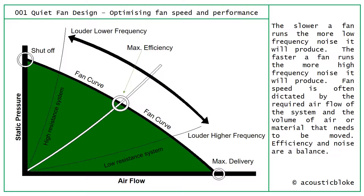Looking at optimized fan speed and performance on a graph — with airflow along one axis and static pressure along the other — the maximum efficiency point is somewhere along that curve, usually in the middle, balancing between louder low frequency noise and louder high frequency noise. As system resistance gets lower, frequency goes up; as it gets higher, frequency goes down. The lower the fan runs, the more low frequency noise it produces. Fan speed is often dictated by the required airflow, so efficiency and noise are always a balance.